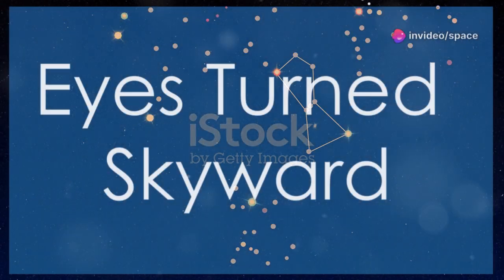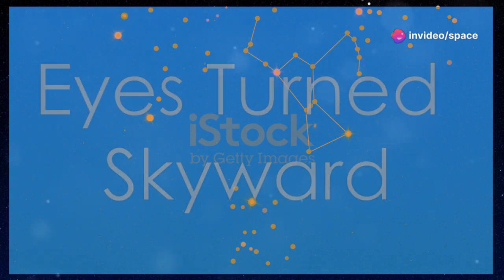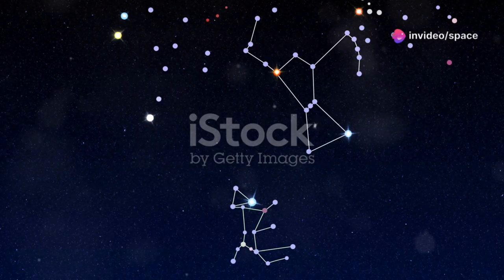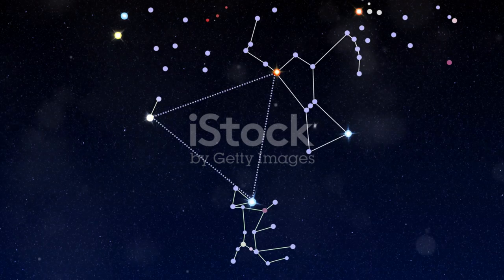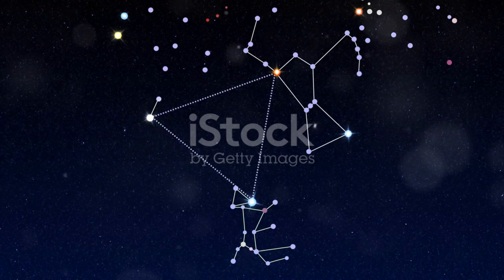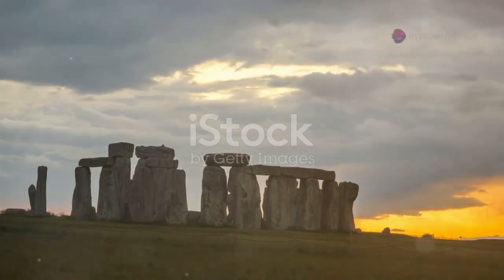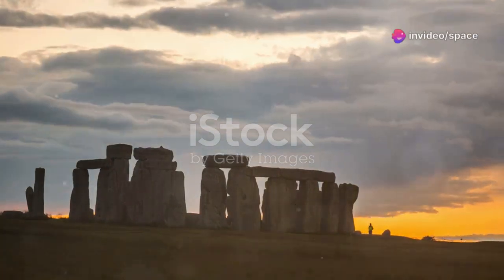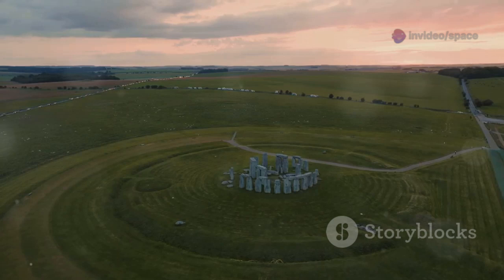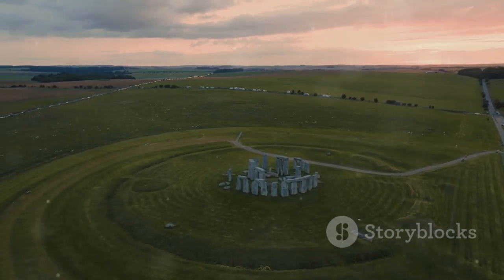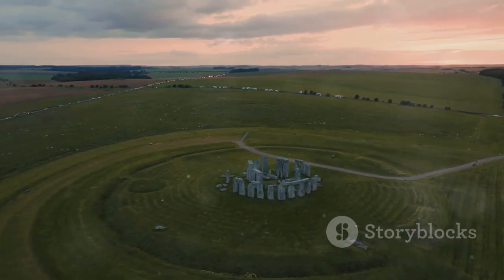Before the advent of modern telescopes, our ancestors relied on simple yet ingenious methods to study the cosmos. They used rudimentary tools and their keen observations to map the night sky, creating star charts that have stood the test of time. Stonehenge, with its massive stones aligned to celestial events, stands as a testament to their ingenuity. This ancient monument was not just a ceremonial site but also a sophisticated astronomical observatory.